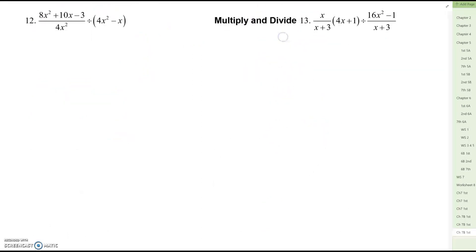We are going to set up number 12 but we aren't going to finish it. When you see a fraction divided by something that isn't a fraction, we can turn this second thing into a fraction if we put it over 1. So then we would keep the first fraction the same. Now that this 4x squared minus x is over 1 now we can flip it over and change the sign to multiply. You would then need to factor 8x squared plus 10x minus 3 and factor 4x squared minus x and then cancel stuff. The reason we're not going to finish this one, do you remember how to factor something that has a number in front of the x squared?